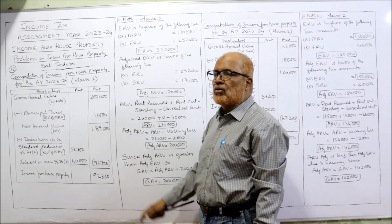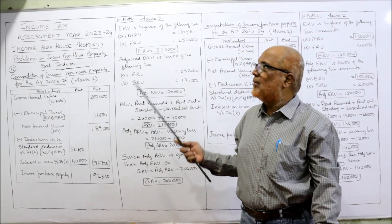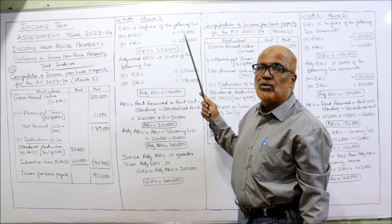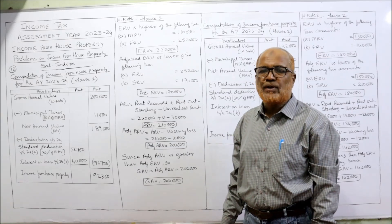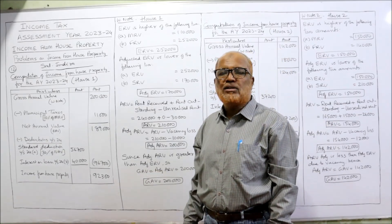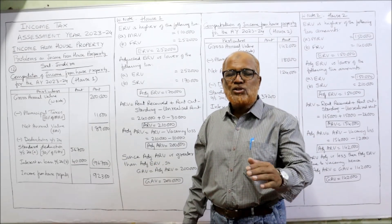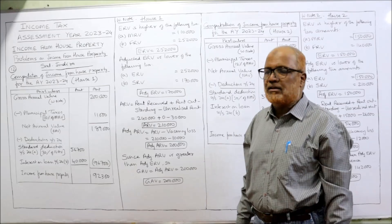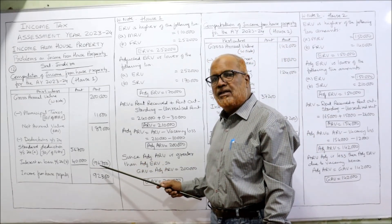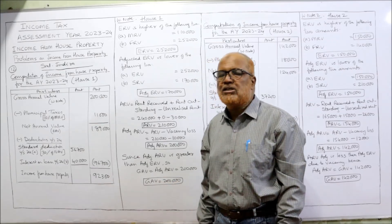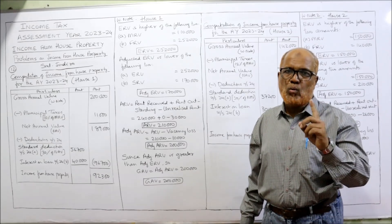GAV is 2,00,000. Municipal taxes are 10% of MRV: 10% of 1,10,000 = 11,000. Deducting gives NAV of 1,89,000. Now deductions: standard deduction 30% of NAV = 56,700. Interest on loan taken to repair the house for house number 1 is 40,000. Total deductions: 96,700. Deducting gives income from house number 1 as 92,300.